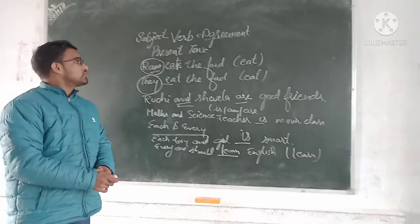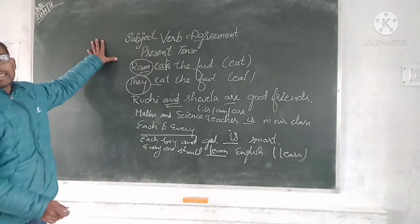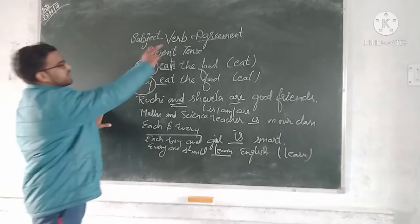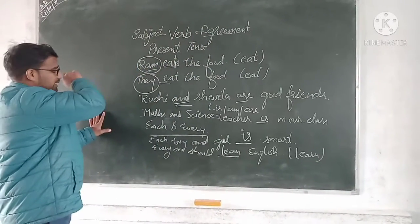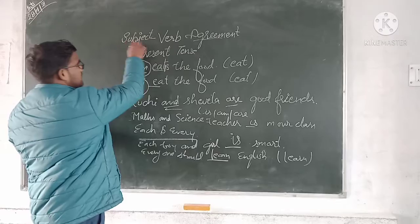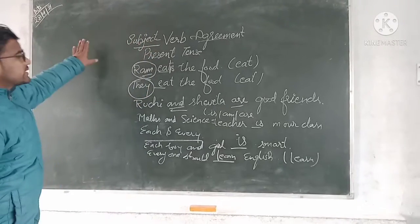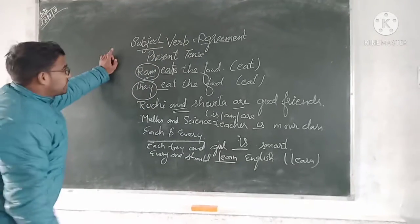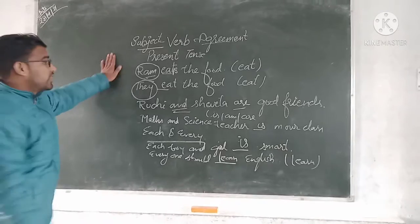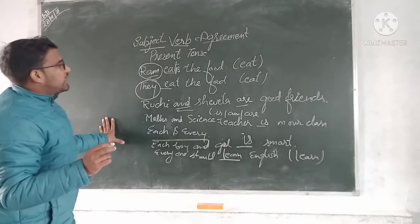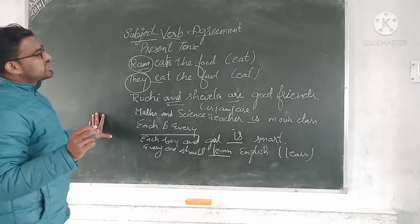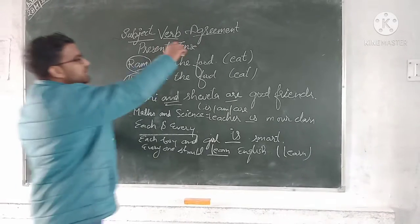Okay, good morning students. Today we are going to learn another simple topic called subject-verb agreement. Now let's take the heading by itself. Subject - what is the subject? The first word of your sentence is called the subject. Verb - everyone knows what is verb. Verb is any activity or action; it indicates work. Agreement - you already know.